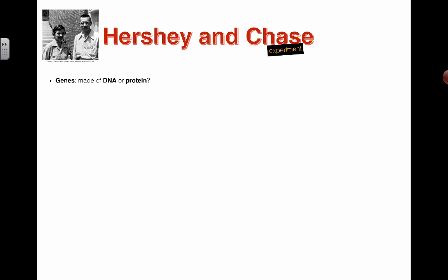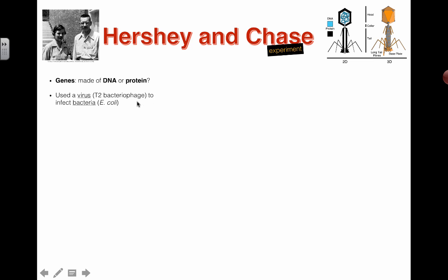The Hershey and Chase experiment was trying to figure out what the genetic material was actually made of. Are genes made up of DNA or protein? They used bacteria, specifically E. coli, and they also used a virus, specifically called a T2 bacteriophage. We don't really consider a virus to be an organism because it's not living and doesn't contain cells.